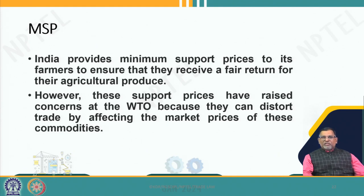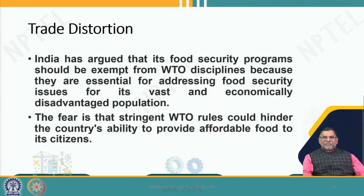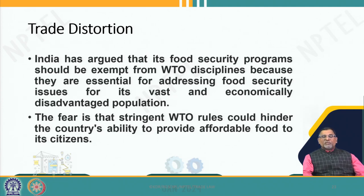India provides minimum support price for various farm products — they purchase it, stockpile it, and distribute it through the public distribution system all over India. This cannot at any cost come under WTO disciplines. It is considered a trade-distorting subsidy, but it is for the betterment of poor people in poor countries. This should be considered as providing affordable food to citizens, not trade distortion.